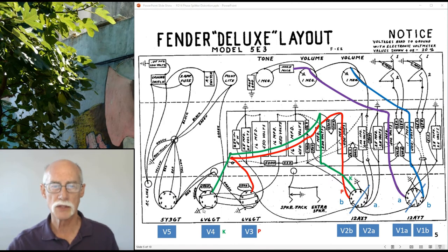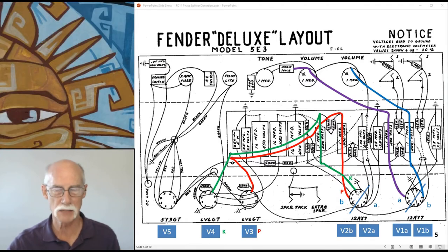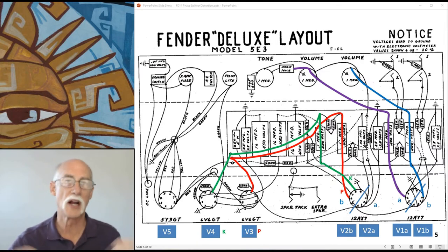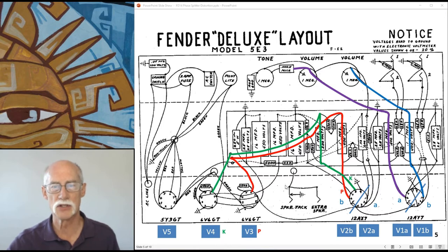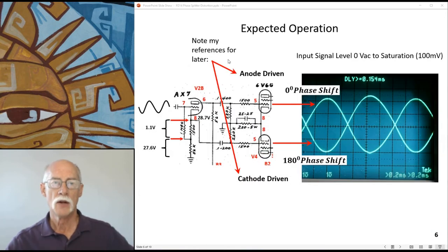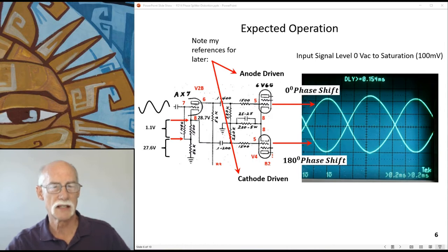The power tubes: this is cathode driven and plate driven, or anode driven. The designation is because of the phase splitter. The plate of the phase splitter drives this tube. The cathode of the phase splitter drives this other tube. This is how I traced it out so I could hook up my oscilloscope today.